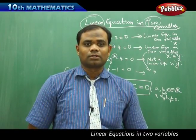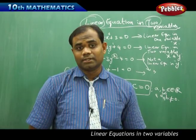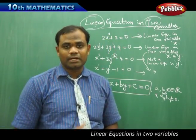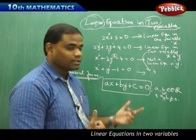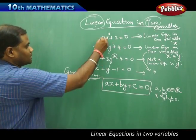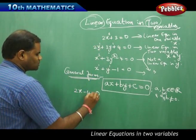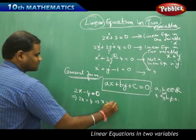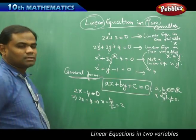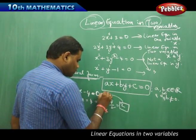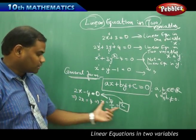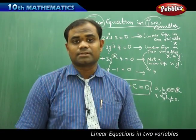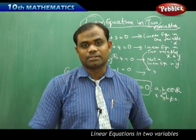Now the question comes on how many solutions does a linear equation have. Every linear equation in one variable has only one solution. If I had a linear equation in one variable as 2x minus 4 equal to 0, then it's easy to find the solution: 2x equals 4 implies x equals 2. But how do we find the solution of linear equations in two variables, which have two unknowns, is what we are going to discuss in the continued session.